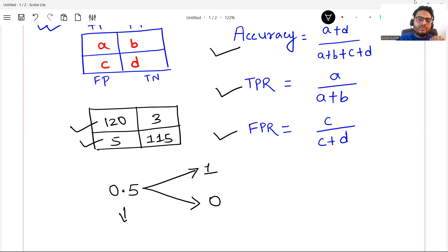If I make this 0.5 as 0.4, then all your numbers will change. Try to digest this. If the threshold is changed, then your confusion matrix changes. If your confusion matrix changes, then your accuracy changes, your TPR changes, and your FPR changes.